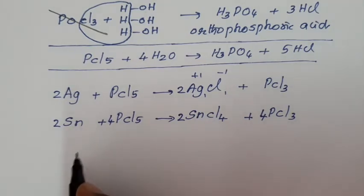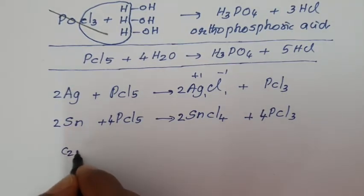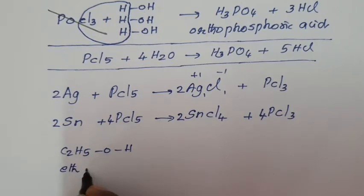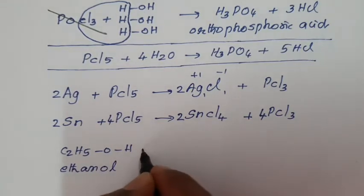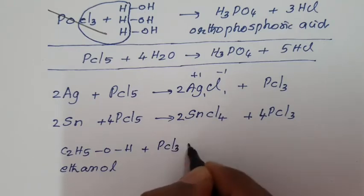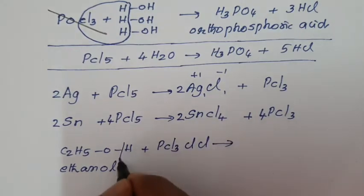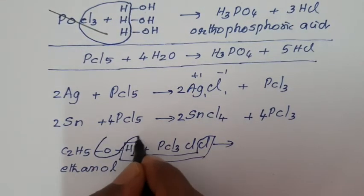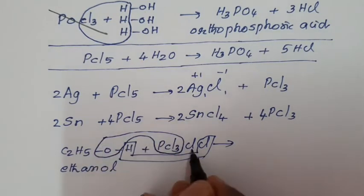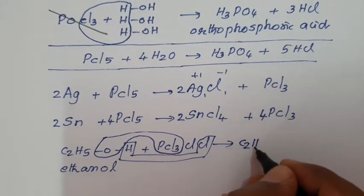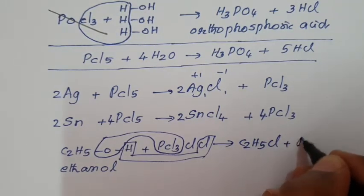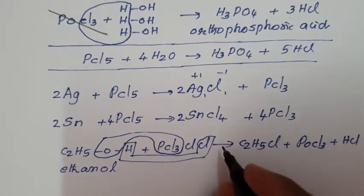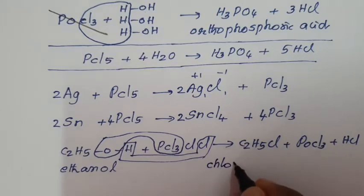In organic chemistry, PCl₅ is used to add Cl in place of OH. Ethyl alcohol (C₂H₅OH, ethanol): when treated with PCl₅, the functional group undergoes reaction. One H and one Cl are removed as HCl; the oxygen and PCl₃ are removed as POCl₃. Chlorine is added to give C₂H₅Cl (ethyl chloride; IUPAC name: chloroethane), plus POCl₃ and HCl.